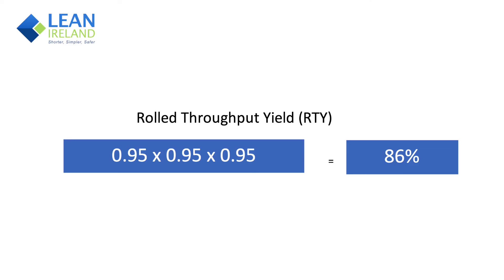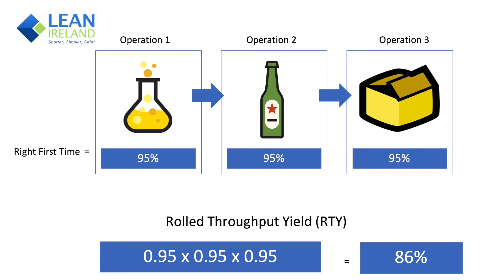In other words, for every 100 products that start the process, only 86 come through completed right first time without some form of rework or without being scrapped. The way in which we calculate the rolled throughput yield is by multiplying the yield at each process step. So 0.95 multiplied by 0.95 multiplied by 0.95 gives you a yield of only 86%. That measurement is called rolled throughput yield.